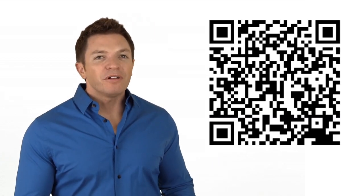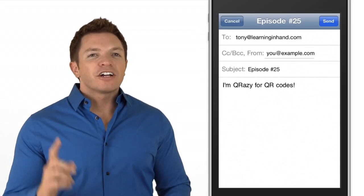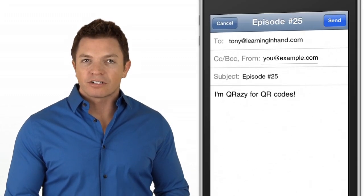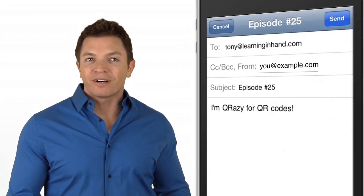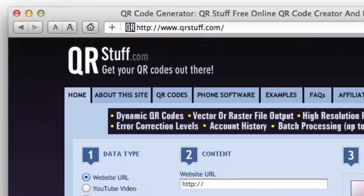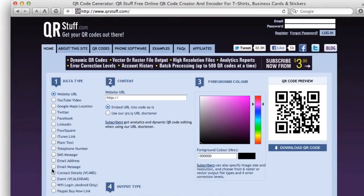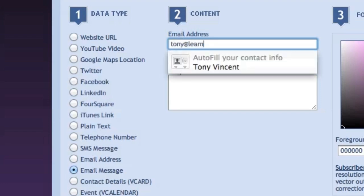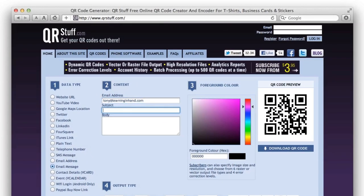QR codes are not limited to text and URLs. They can be used for other kinds of information. For example, if you scan this code, it will start an email message from you to me. I created a code that contains my email address, the subject, and the beginning of the message. You can continue editing the message before sending. I made this code at qrstuff.com. I selected email message as the data type and entered an email address, the subject, and body text. This can be so handy for collecting student and parent feedback.